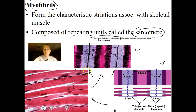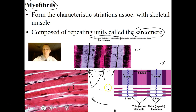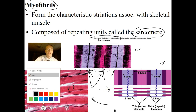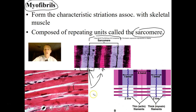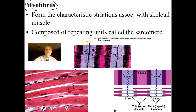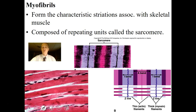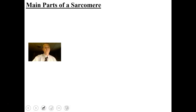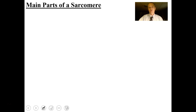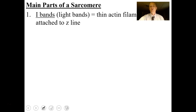Within a sarcomere there are different bands: the I-band, the A-band, the Z-line, the M-line, and the H-zone. You will be responsible for knowing these. Look at the artist's rendition to understand how they're all named. You won't understand how this thing works unless you know the anatomy of how it's arranged.